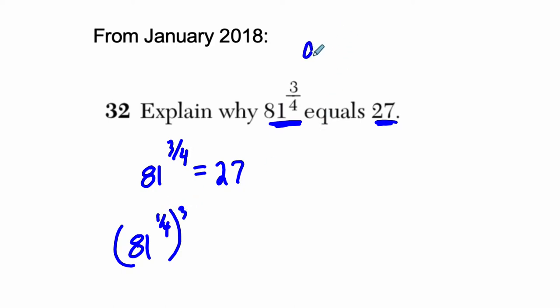The basic law states something like this: a to the m to the n equals a to the m times n. In other words, you can multiply these exponents and they will be equivalent.